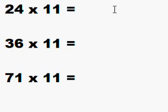Let's start with 24 times 11. You write down 24, and in between the 2 and 4 you put another number. This number will be 2 plus 4. 2 plus 4 is 6, so 24 times 11 is 264. Let's do the same thing again for 36 times 11.